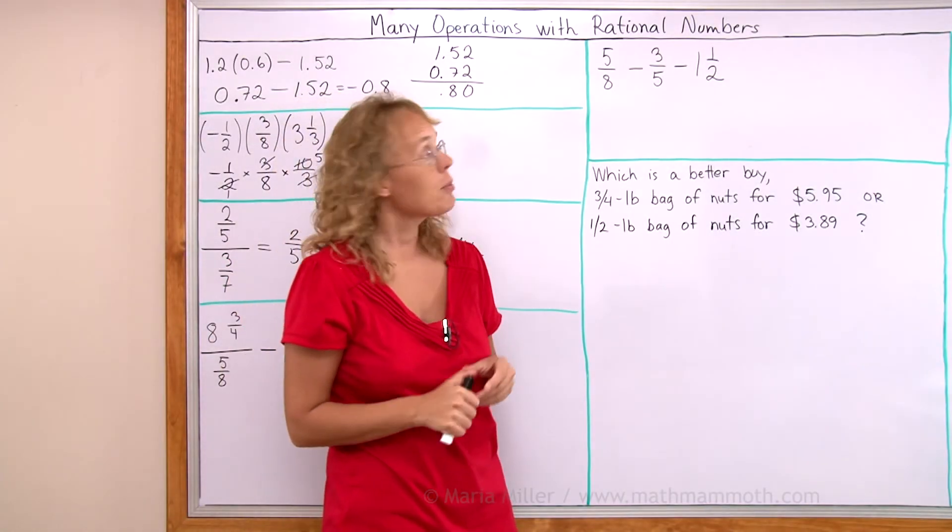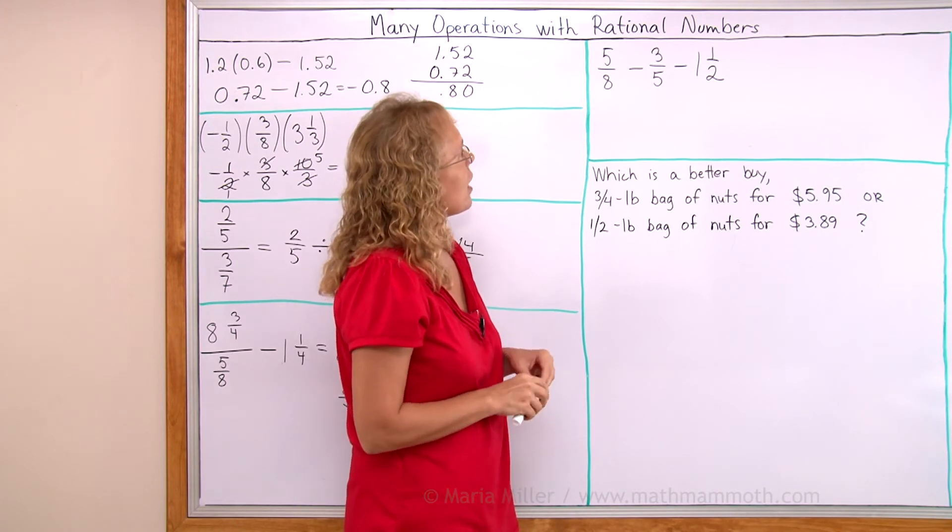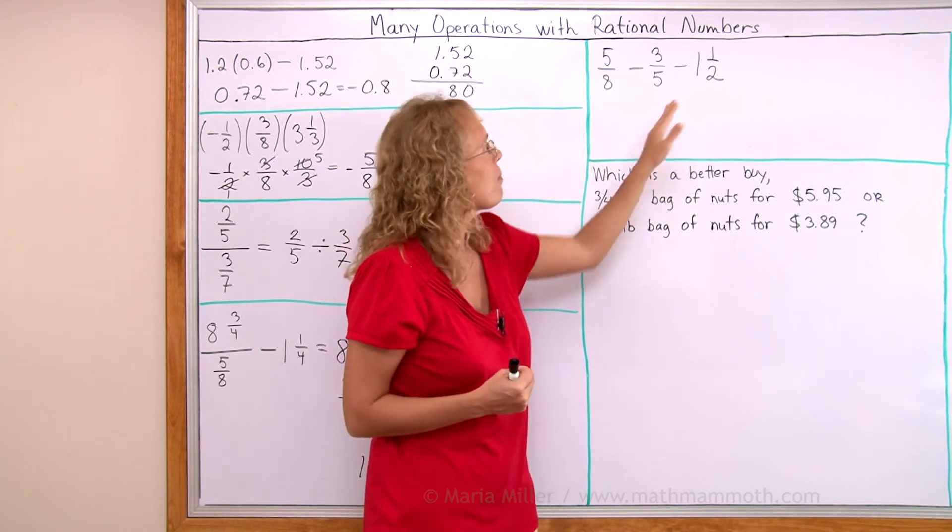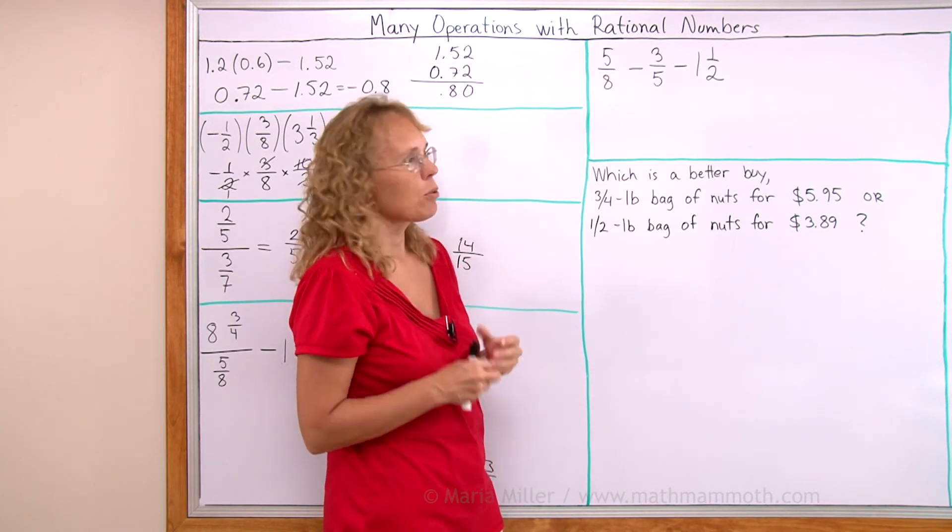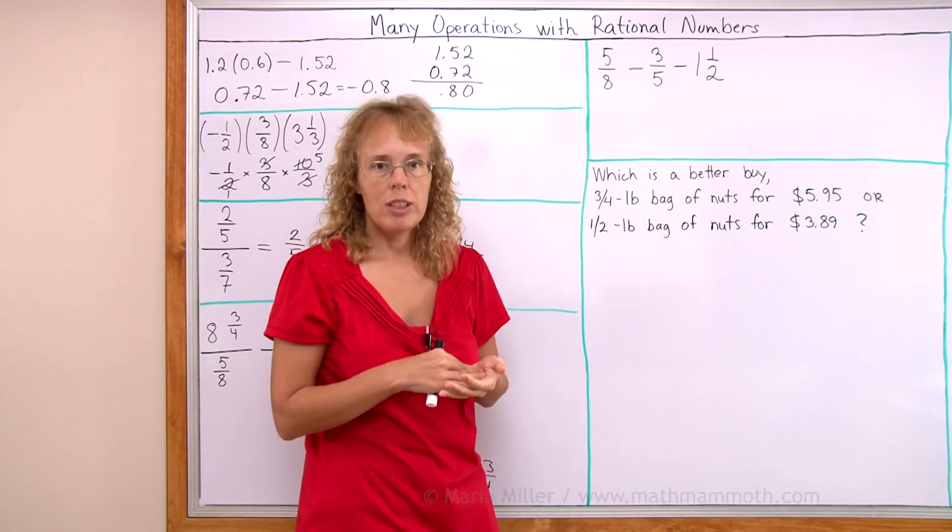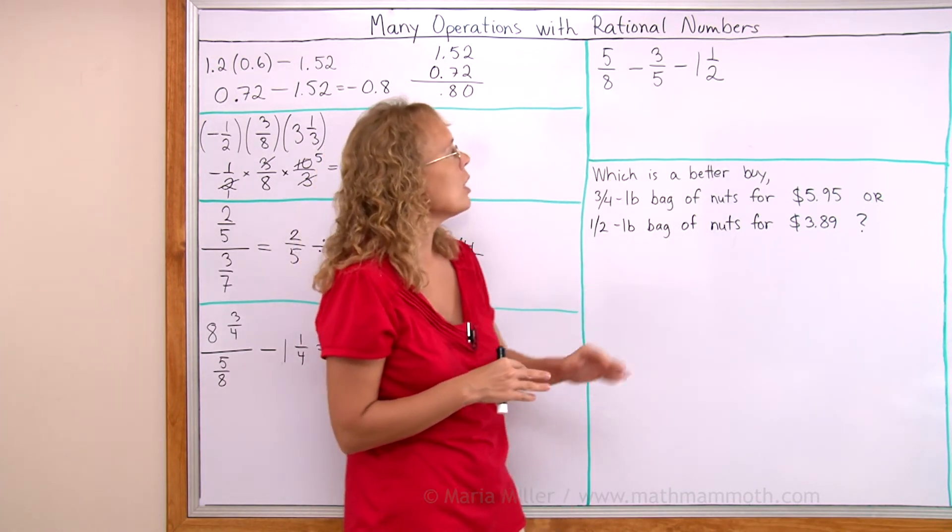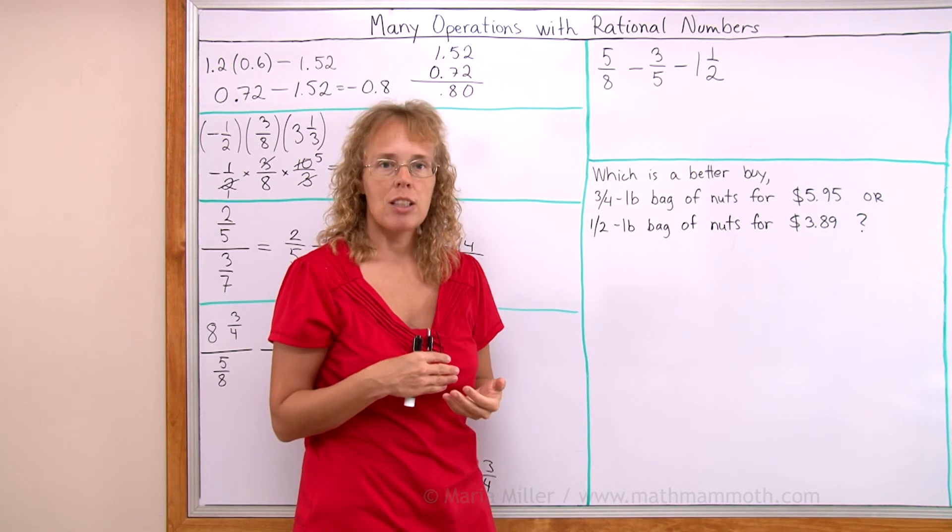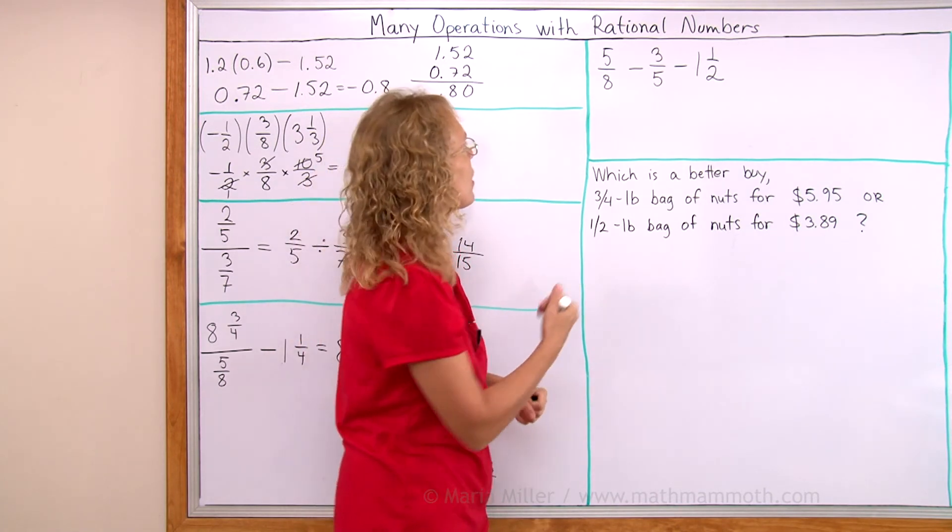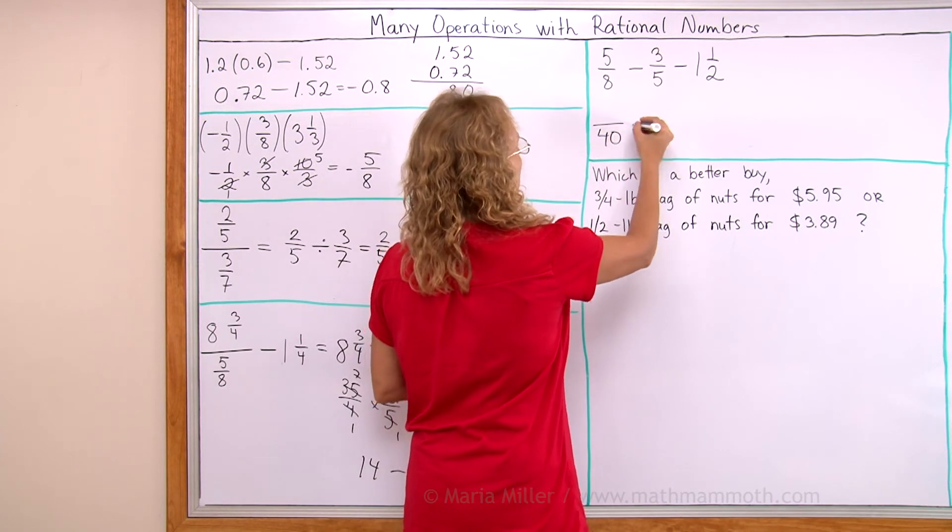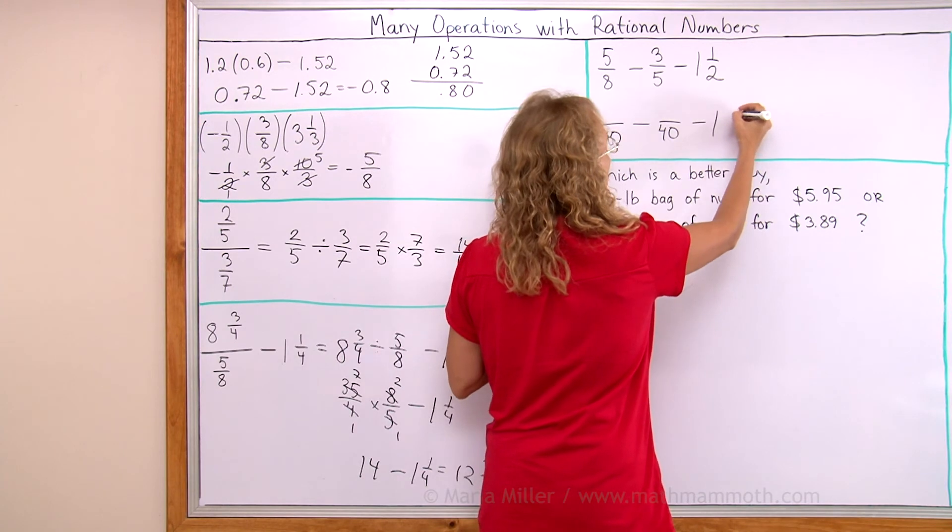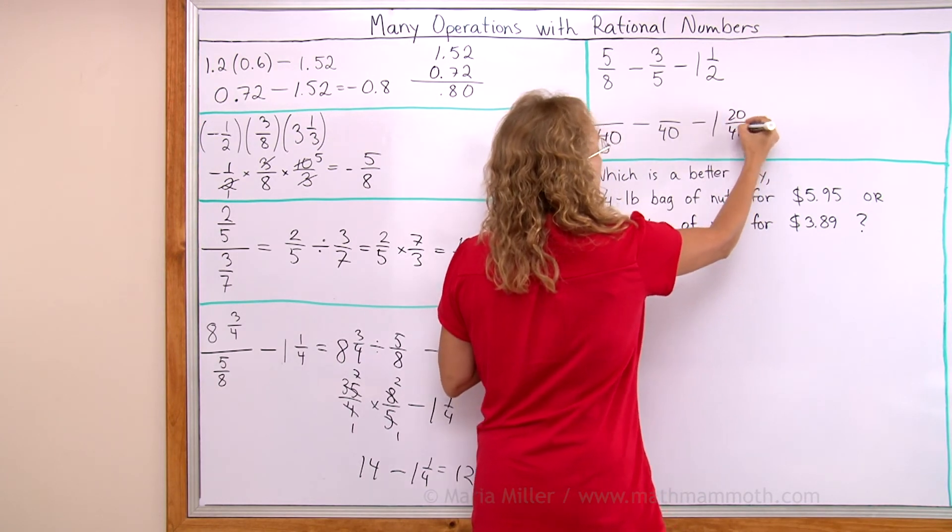And lastly, a fraction subtraction. And there are, there's three different denominators here. And I think I can just use one common denominator. 8 and 5 would need to use 40. But 40 will work for 2 too. So I will now change this so that each fraction will have a common denominator, 40. And then this last one will be 1 and 20 over 40.